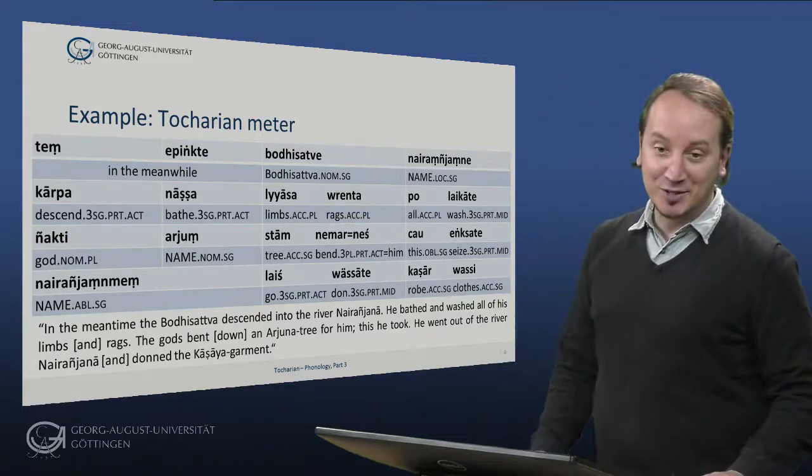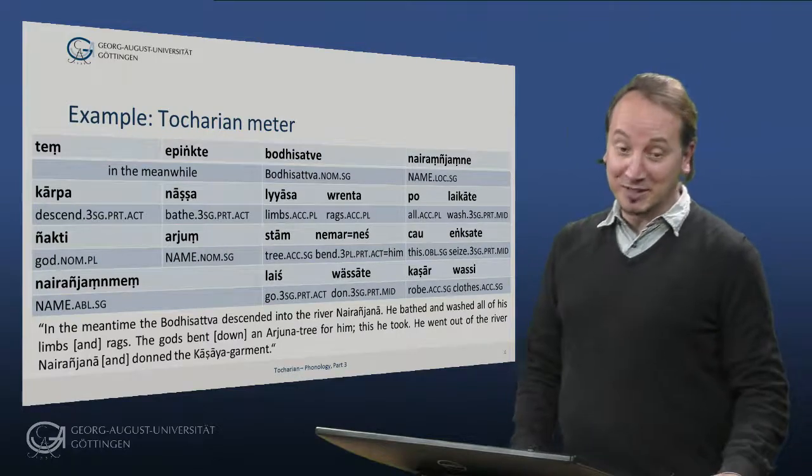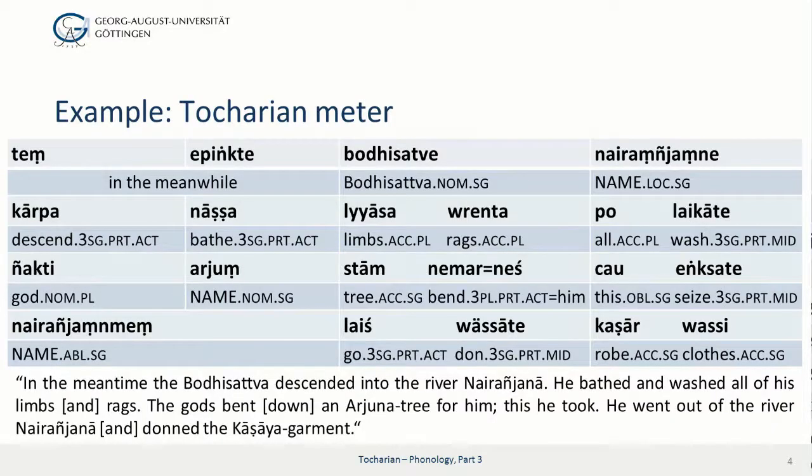So let me try to read this passage to you rhythmically. Ten empikte Bodhisattva Nairañjana, kārpa nāśa lyāsa vreṃda poläkäte, ñäkti arjun stam nemārneś cäweṅgsäte, Nairañjanā laiś vissäte kāṣārvasi.